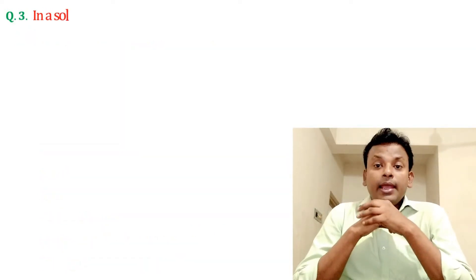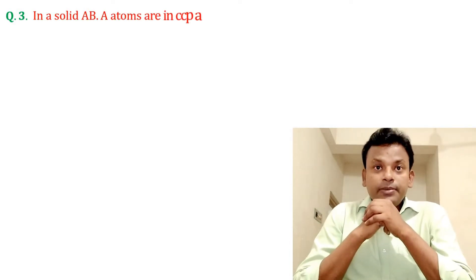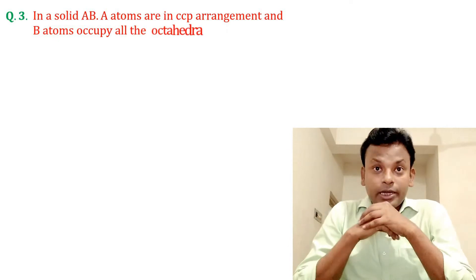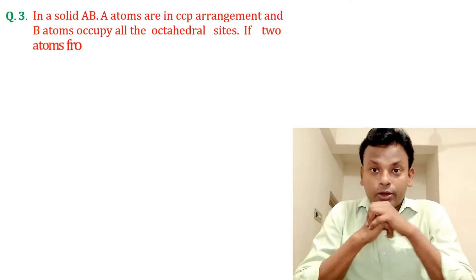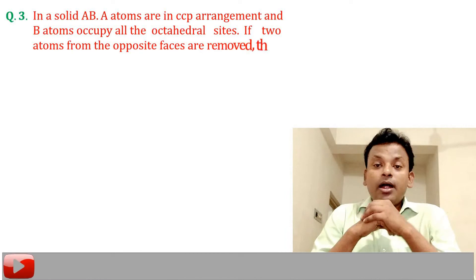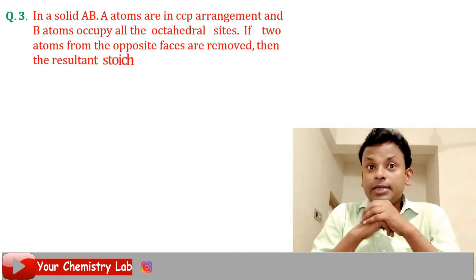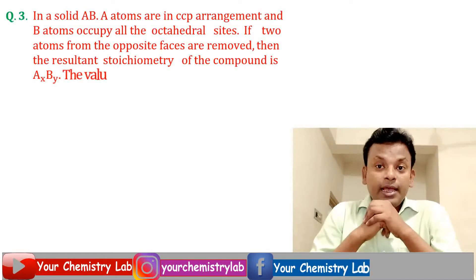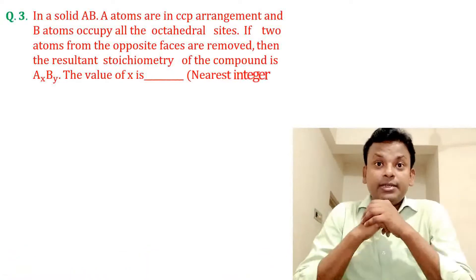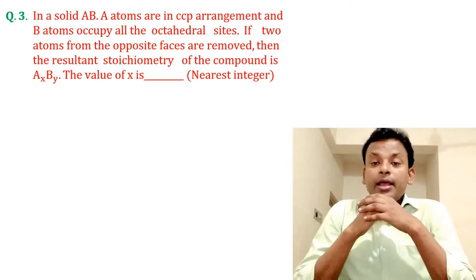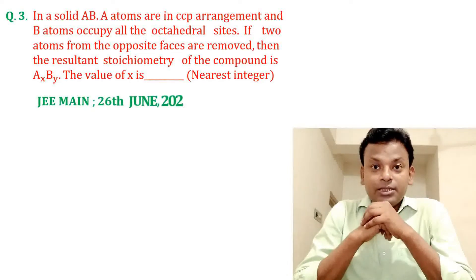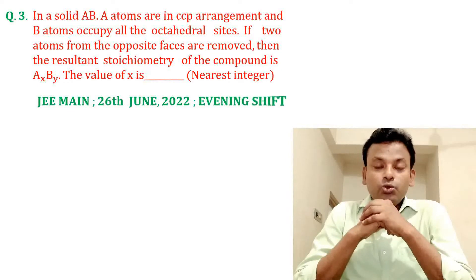Question 3. In a solid AB, A atoms are in CCP arrangement and B atoms occupy all the octahedral sites. If two atoms from opposite faces are removed, then the resultant stoichiometry of the compound is AₓBᵧ. The value of X is — (nearest integer). This question was set in JEE Main 26th June 2022 evening shift.